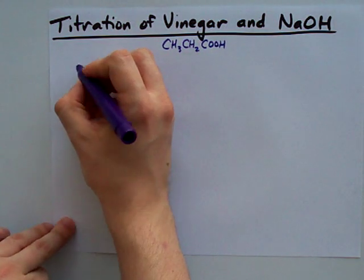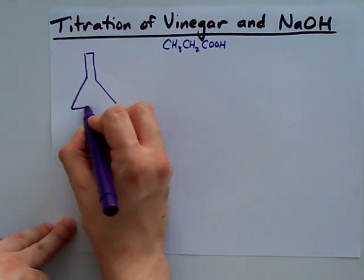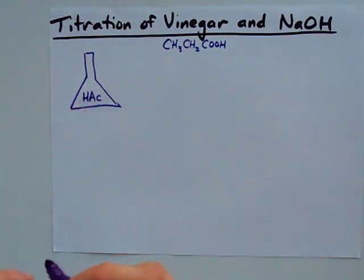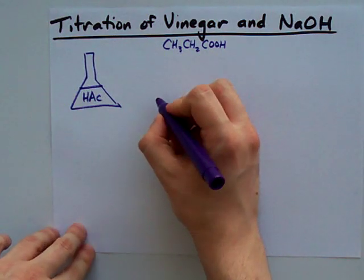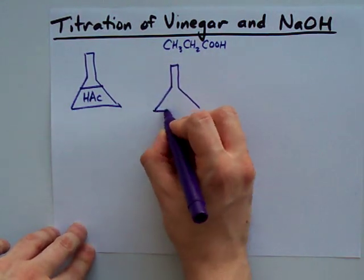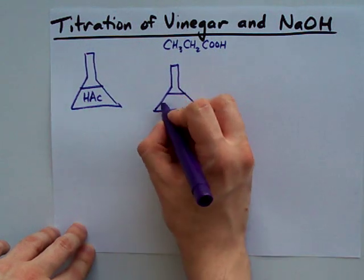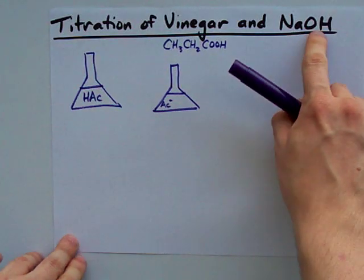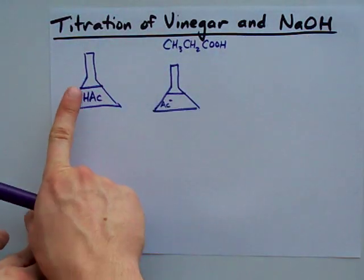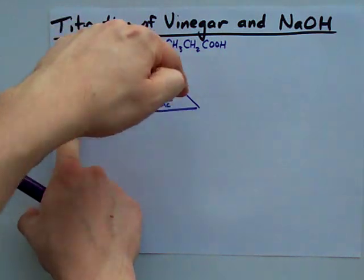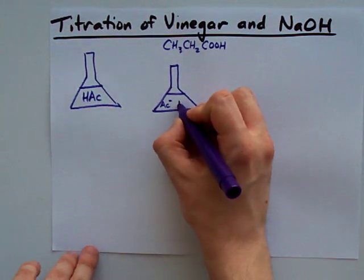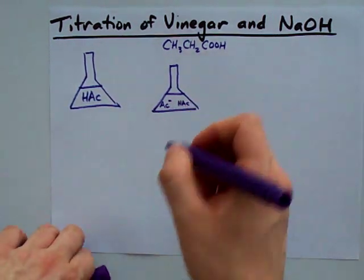When you start with vinegar in your solution, I'm going to call it HAc for acetic acid, just so that you can keep track of where the H is. As you slowly add NaOH to the solution, what you end up doing is converting some of that HAc into just AC-. The OH reacts with the H and leaves an AC- behind. This is actually the conjugate base of the acid, and you still have some acid left in your solution.